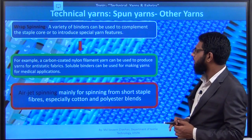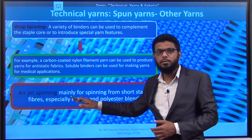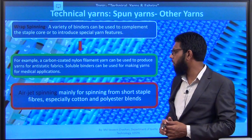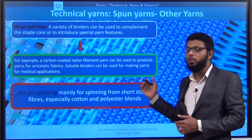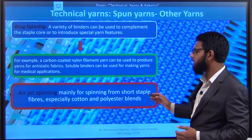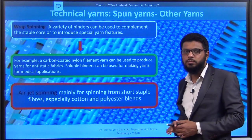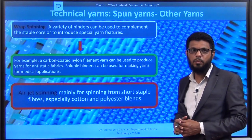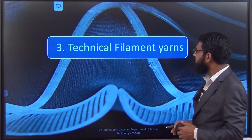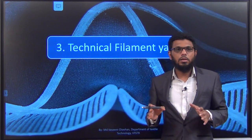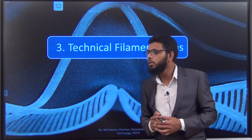The disadvantage of the airjet system is that it has very limited scope because its configuration is in between ring and rotor. It is mainly for spinning short staple fibers and especially is limited to cotton. The processing of high performance fiber is not possible in airjet spinning, so it has very limited use in technical textiles. This is all about the technical spun yarn. Now we will see the next topic: technical filament yarn.